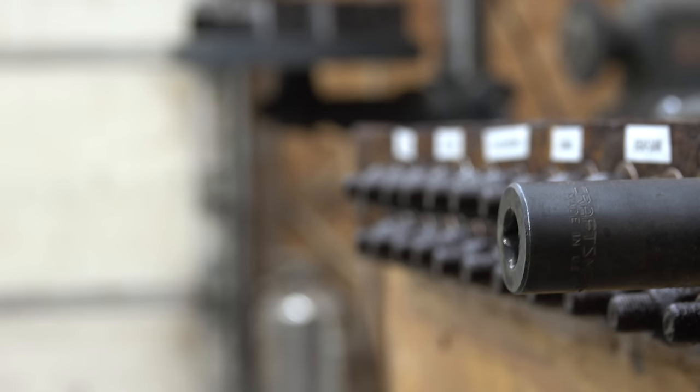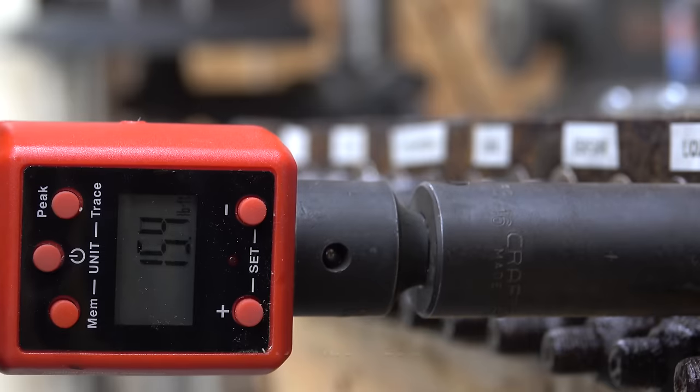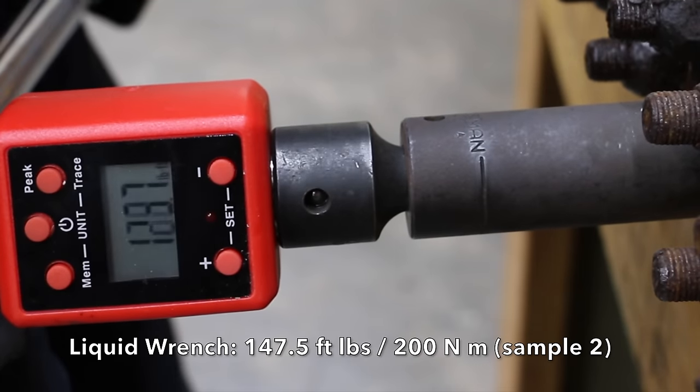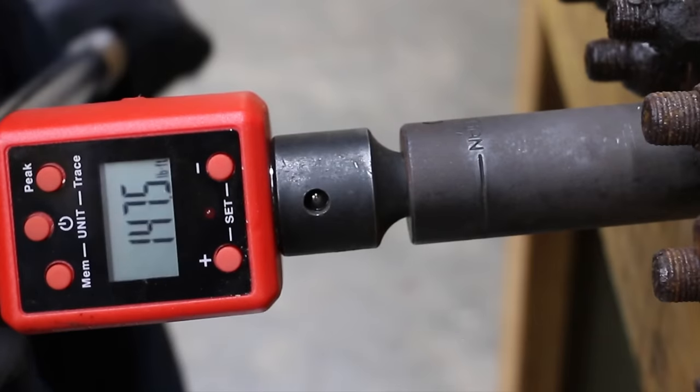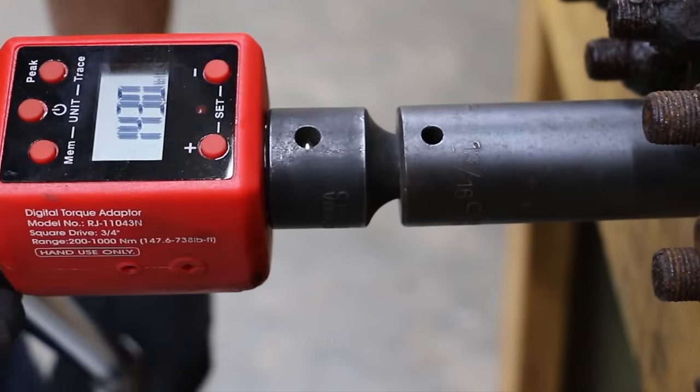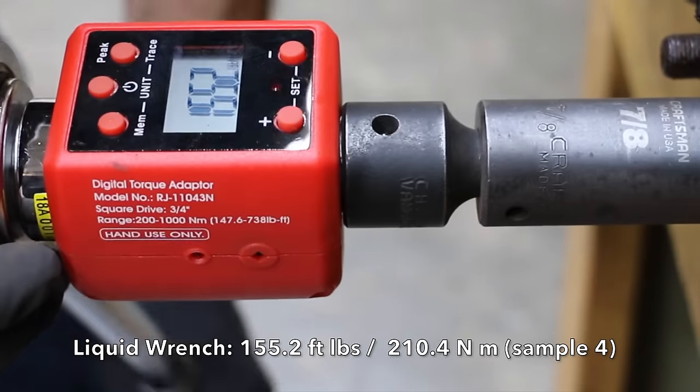It's been right at one hour since the penetrating oils were applied, so let's begin the testing beginning with liquid wrench. The first bolt broke free at 151.9. The second bolt required 147.5. The third broke free at 143. The fourth needed 155.2.